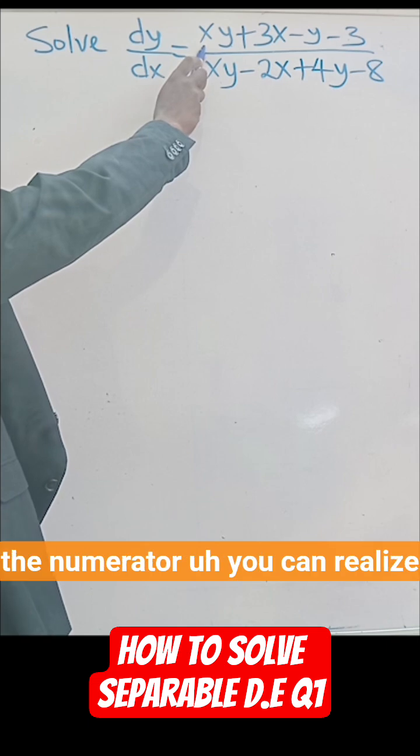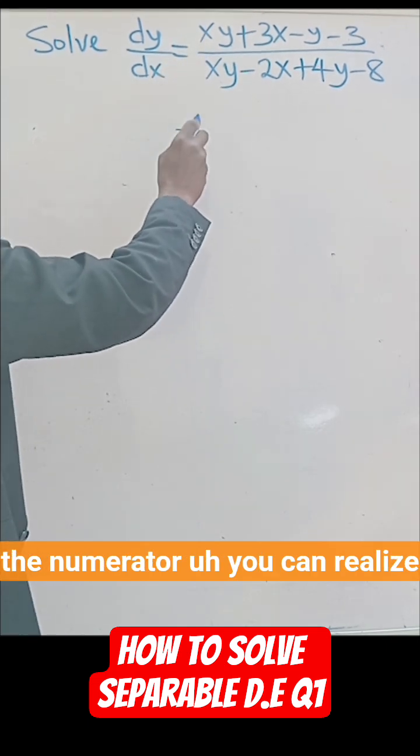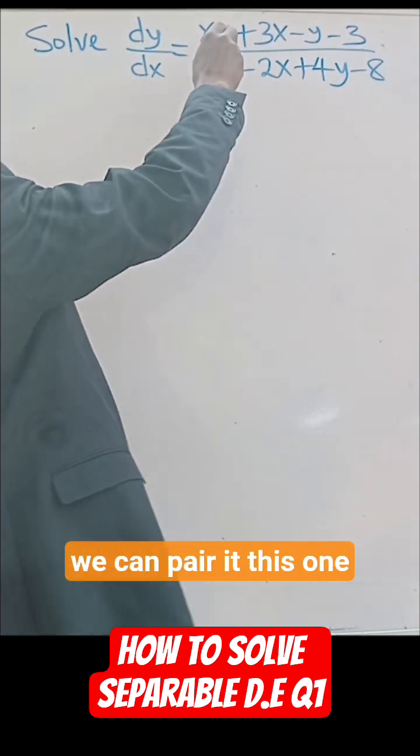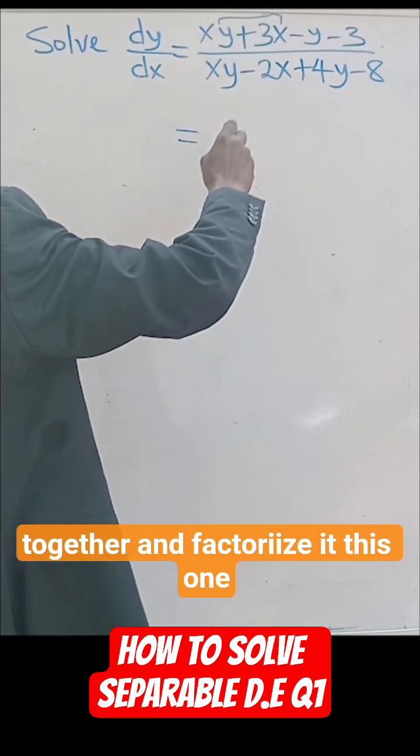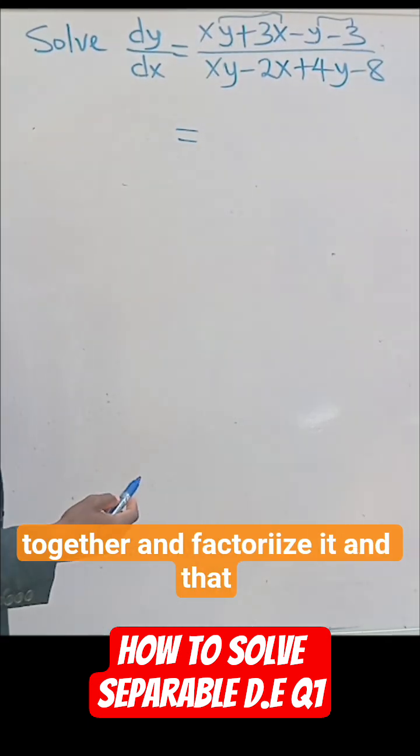What we're going to do for the numerator, you can realize that there are 1, 2, 3, 4 terms. So we can pair this one together and factorize it, and this one together and factorize it.